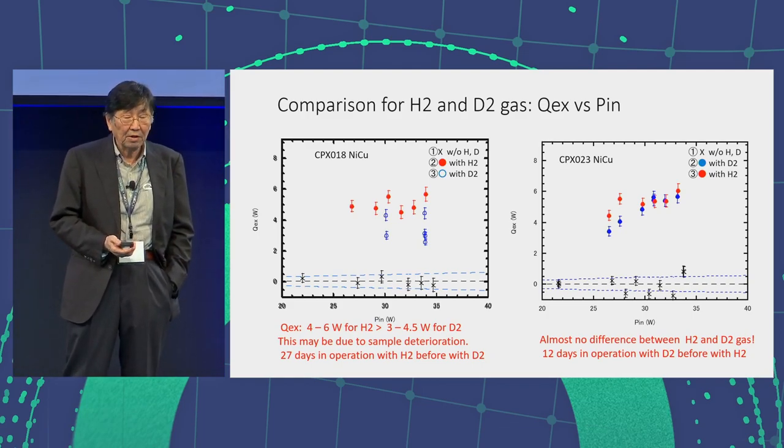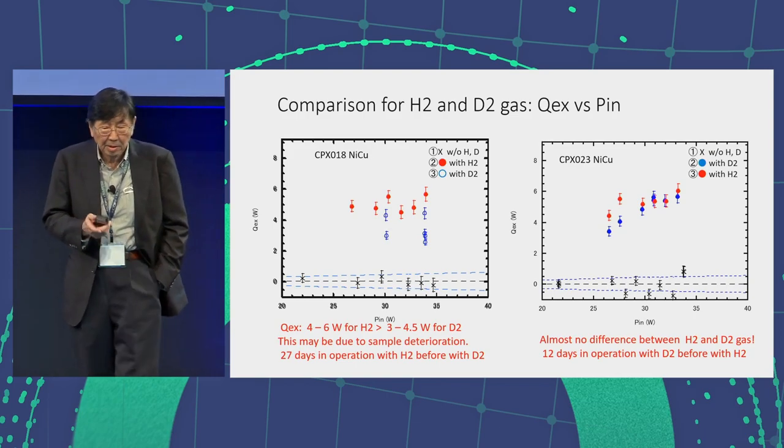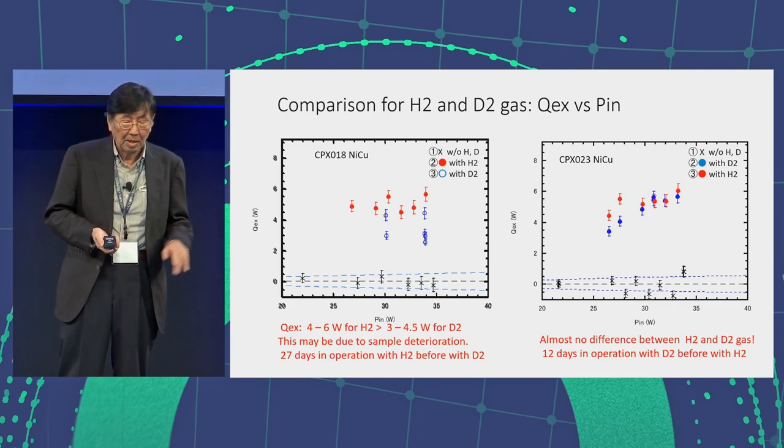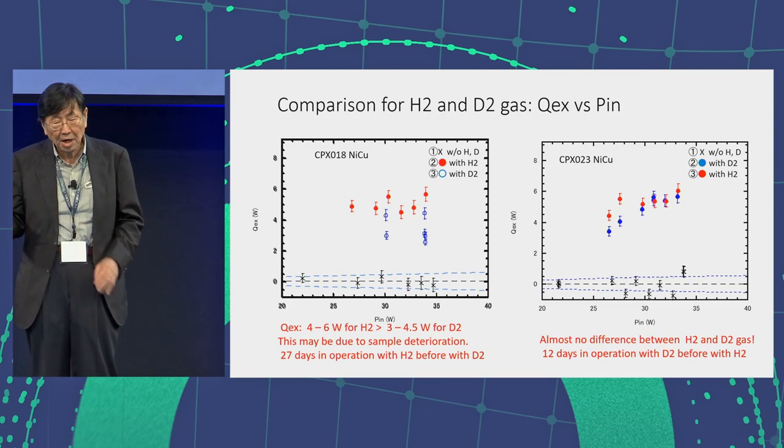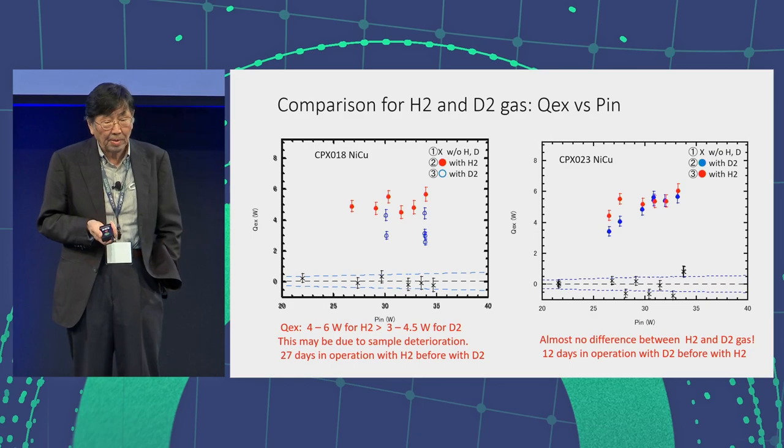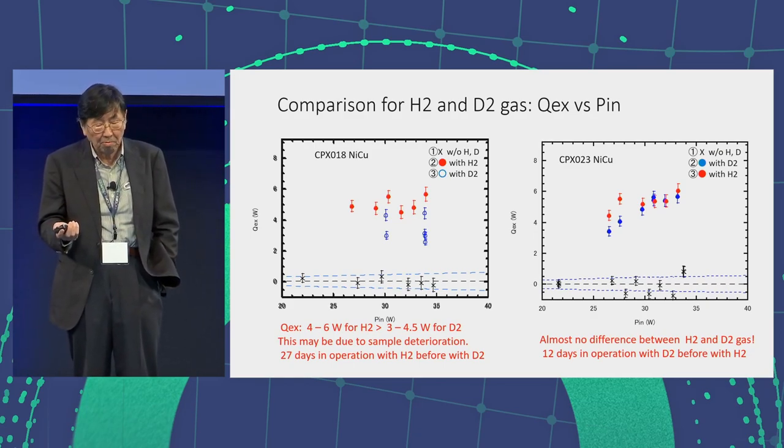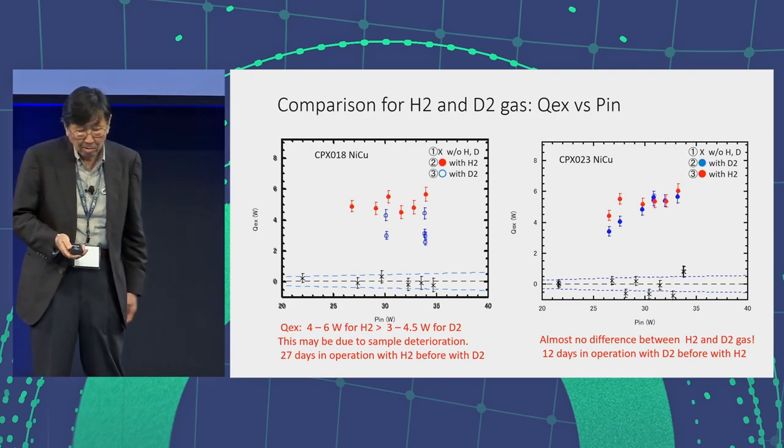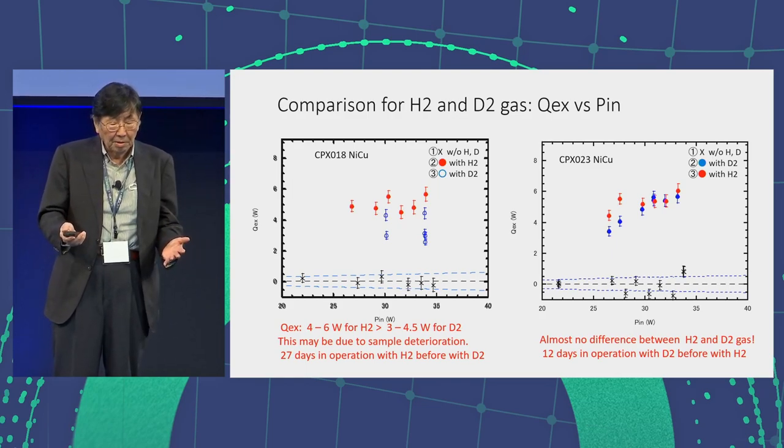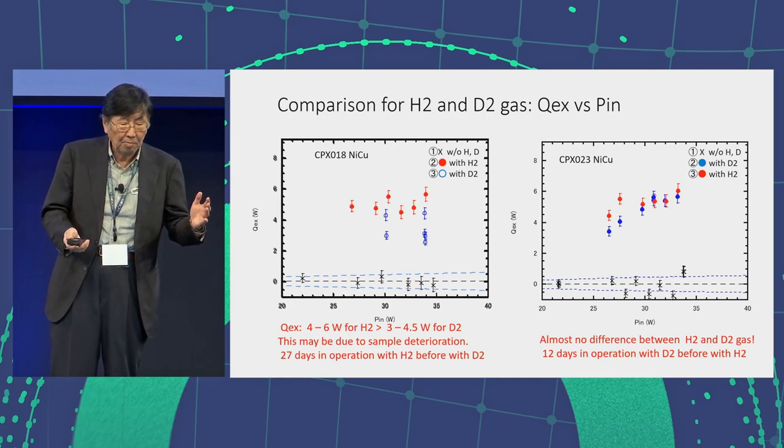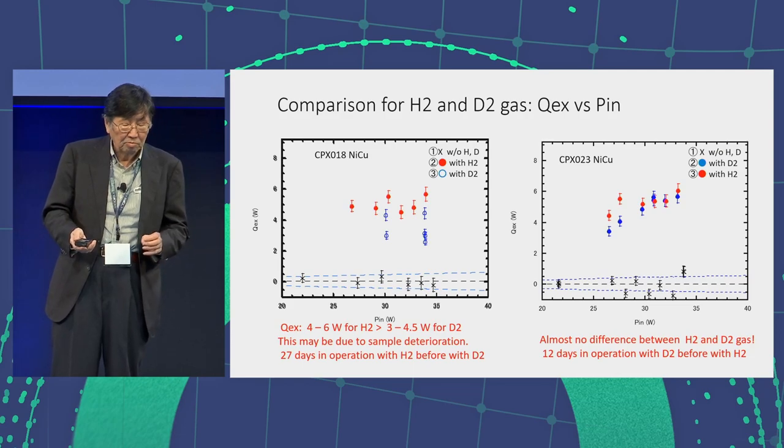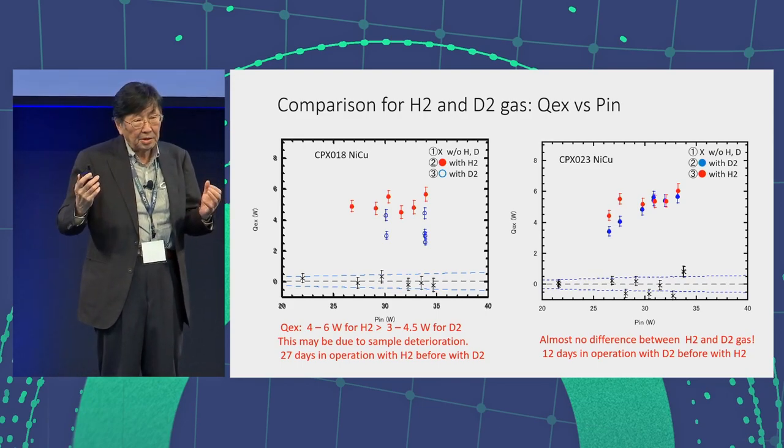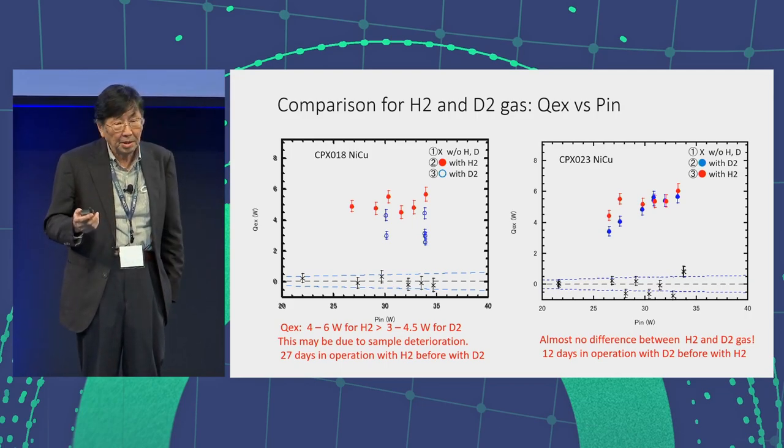Excess heat is evaluated by that equation I showed before. This is the plot for the evaluated excess heat. Left side, just sample 18, and the right side, 23. We also put the three data, three sets of data. X is just a background measurement, red corresponds to the hydrogen, and the blue corresponds to the D2. I would say a little difference for the CPX 18th spectra, but it seems to me it's very little. Therefore, I can say that almost no difference between the hydrogen gas and the deuterium gas.